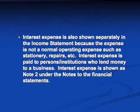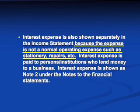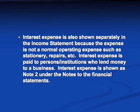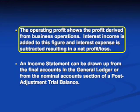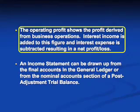The interest expense is also shown as a separate note in the income statement because this expense is not a normal operating expense such as stationery or repairs. The interest expense is paid to the persons or institutions who lend money to the business, and is shown as note number two under the notes to the financial statements. The operating profit shows the profit derived from business operations — interest income is added to this figure and interest expense is subtracted, resulting in a net profit or loss.